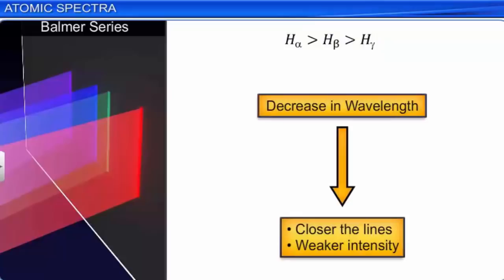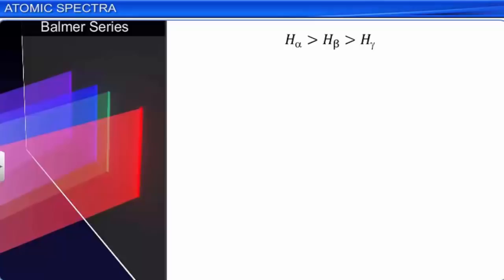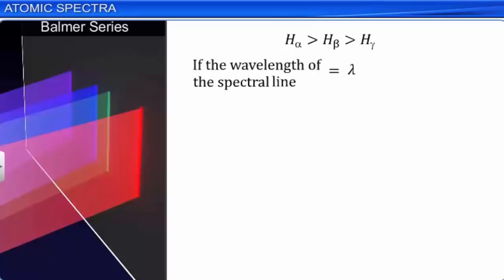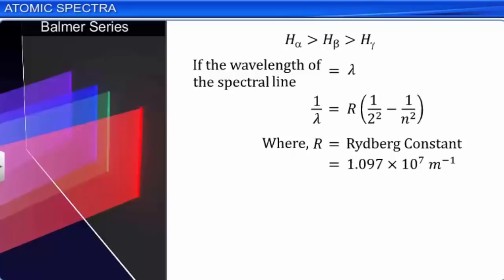Balmer gave a simple empirical formula which these wavelengths follow. If the wavelength of the spectral line emitted is λ, then 1/λ = R(1/2² − 1/n²), where R is the Rydberg constant equal to 1.097 × 10⁷ per meter, and n takes integral values 3, 4, 5, and so on up to infinity. This equation is called the Balmer formula — equation 1.